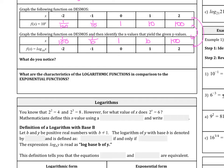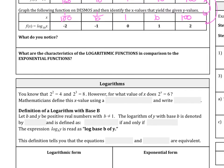So you know that 2 squared equals 4 and 2 cubed equals 8. However, for what value of x is 2^x equals 6? Mathematicians define this x value using what's called a logarithm. And they would write x equals log base 2 of x.